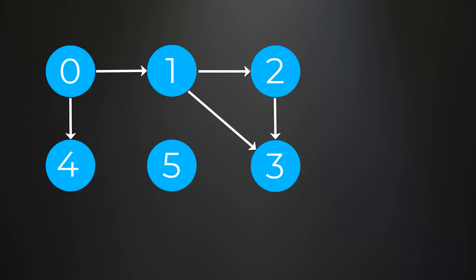First, we need to calculate all of the indegrees for each node in the graph. Starting with node 0, it does not depend on any other nodes — no arrows are pointing to it, so it has an indegree of 0. Node 1 depends on node 0 and has one arrow pointing to it, so it has an indegree of 1. Node 2 depends on node 1 with one arrow pointing to it, so it has an indegree of 1. Node 3 depends on node 1 and node 2, with two arrows pointing to it, so it has an indegree of 2.